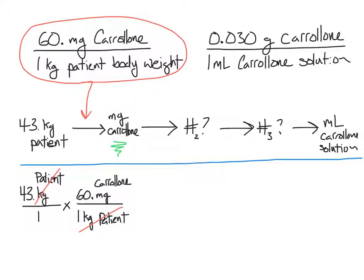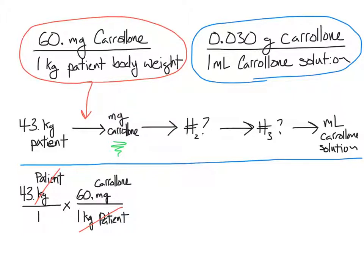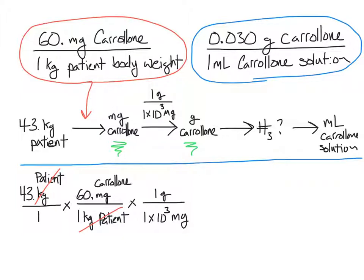To convert milligrams carolone to milliliters carolone solution, we'd need to use the concentration conversion factor. However, we can't use it directly because we're in units of milligrams and the conversion factor is in units of grams. So we need to add another conversion factor — the conversion between milligrams and grams. There are 1000 milligrams per gram, or 1 milligram equals 1×10⁻³ grams. Adding that conversion factor means unknown number two is in units of grams carolone, with milligrams canceling out.